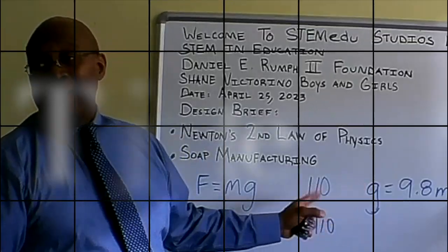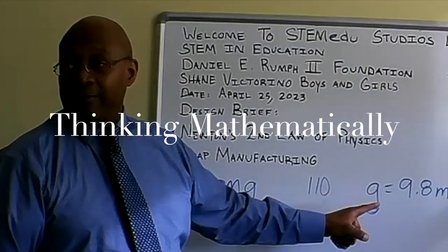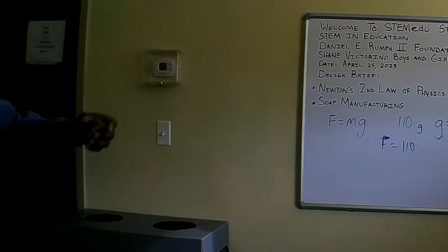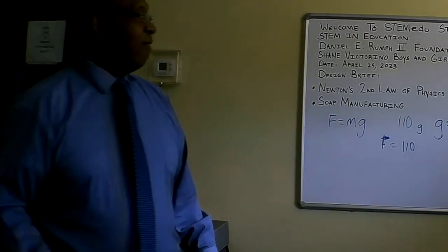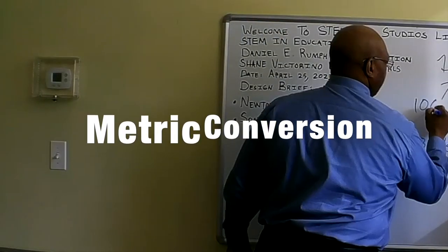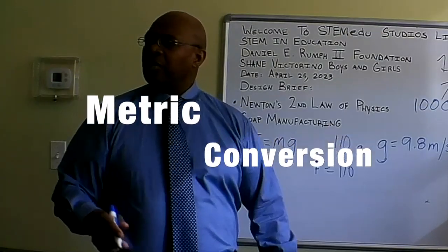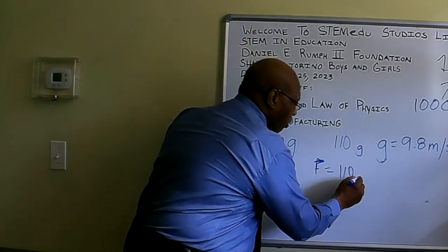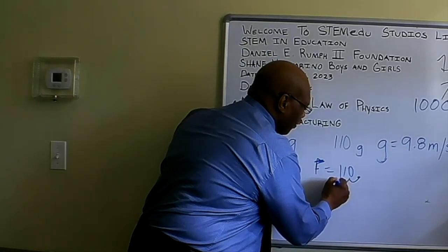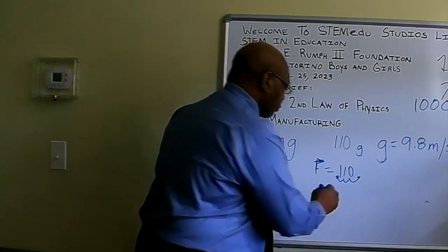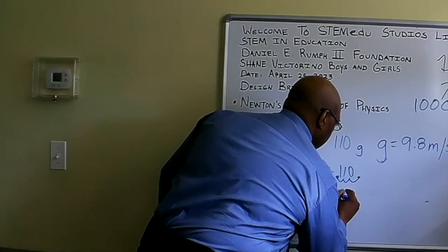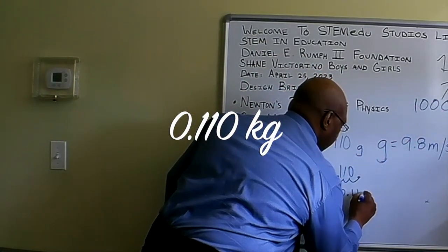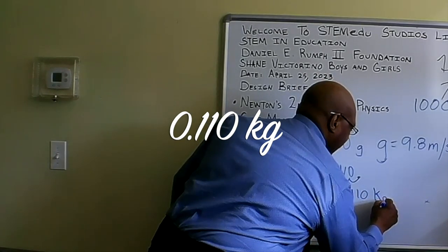One thing about mass, we have to use kilograms rather than grams. This is in grams. It takes a thousand grams to equal one kilogram. If we have a thousand, how many zeros do we have? Three zeros. If we have three zeros, we have to move it three places. So if we go one, two, three, that changes to 0.110 kilograms K.